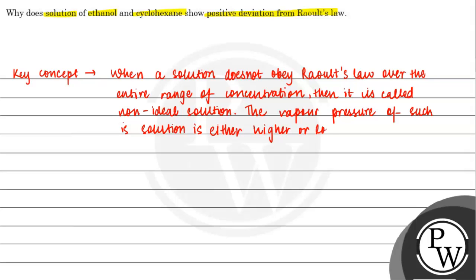If any solution has vapor pressure higher than predicted by Raoult's law, then it is known as positive deviation. If it is higher than predicted by Raoult's law, then it is considered as positive deviation.